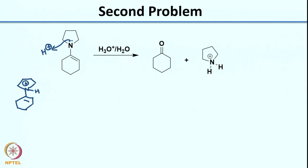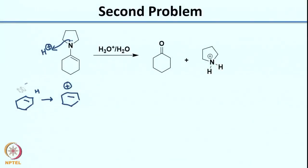What can the molecule do after generating this species? The only option would be to generate a cation, which is highly unstable. The molecule will not prefer to do something that makes it so unstable, so this will not be a reaction path. Let us erase this because it is not a good reaction path.